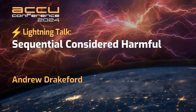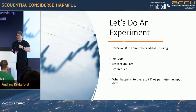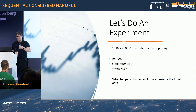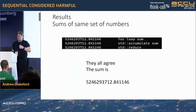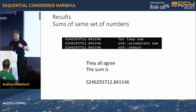We're going to do an experiment: we're going to add 10 billion zero-to-one random numbers using a for loop, accumulate, and reduce without any adornments. And this is what we get. Fantastic — they all agree, we're all very happy.